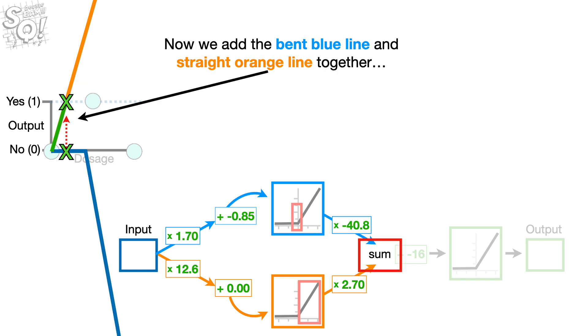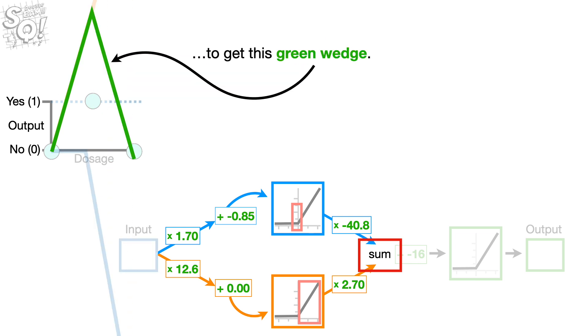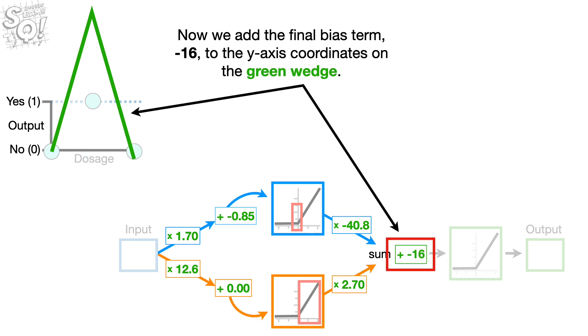Now we add the bent blue line and the straight orange line together to get this green wedge. Now we add the final bias term, negative 16, to the y-axis coordinates on the green wedge.